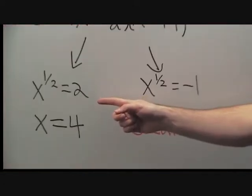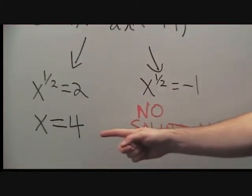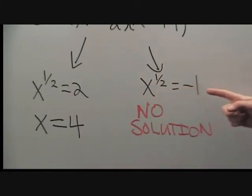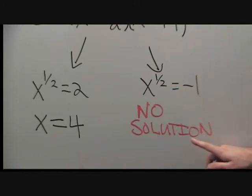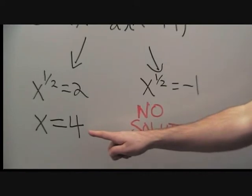This line gives us the solution x equals 4. And this line, because it is impossible to take the square root and get a negative number, gives us no solution. So the intersection point occurs at x equals 4.